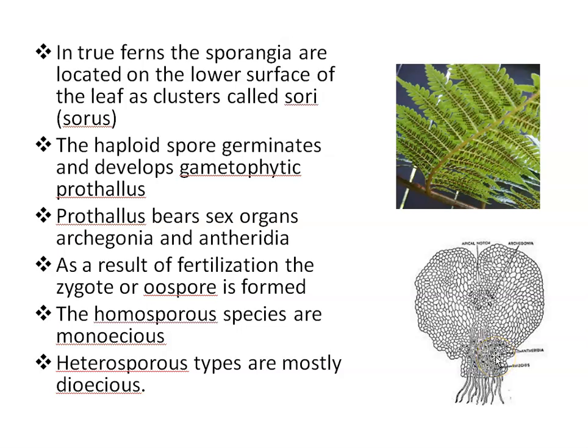As a result of fertilization, the zygote or oospore is formed. Homosporous species are monoecious, meaning antheridia and archegonia are borne on the same thallus. Heterosporous types are mostly dioecious, where antheridia and archegonia are borne on separate male and female prothalli respectively. Microspores give rise to male prothallus, which produces the male sex organ, antheridium. Megaspores give rise to female prothallus, which produces the female sex organ, archegonium.